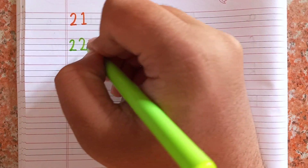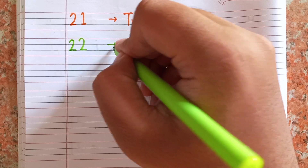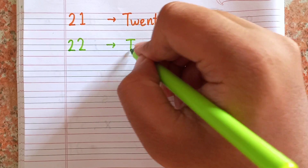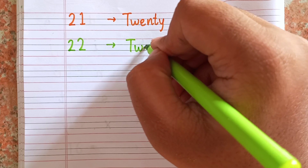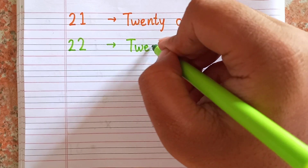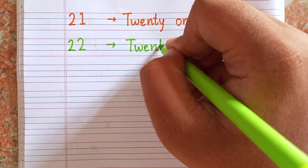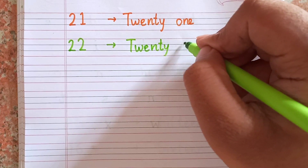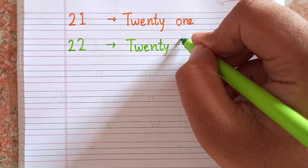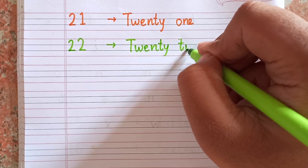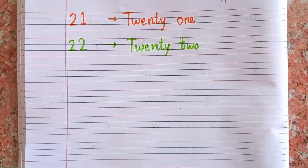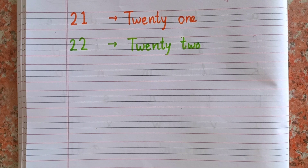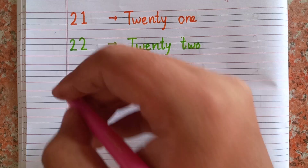After twenty-one, the next number is twenty-two — 2-2. The spelling of twenty-two is T-W-E-N-T-Y T-W-O. 22.